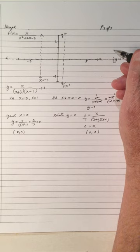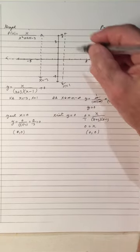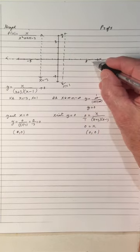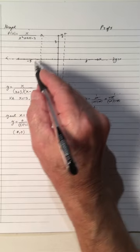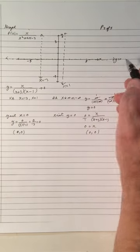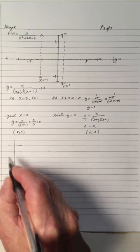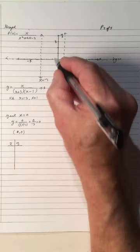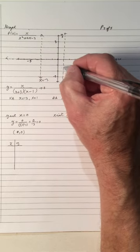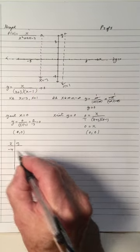We have both intercepts at 0. Now how does the graph behave? As x goes to infinity, y goes to 0. The graph could go this way, or come in this way. As x goes to negative infinity, it could come down here or come up here. We need to check. Something is happening between the two vertical asymptotes. Let's check with x equals negative 4.